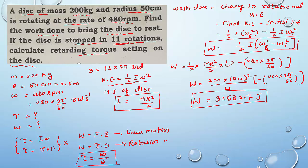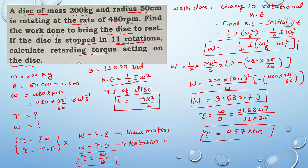Then we go for torque. Torque τ = W/θ. W is 31,582.7 J divided by θ, which is 11 rotations = 11 × 2π radians. After calculating, we get τ = 457 newton meter. So torque is 457 N·m and work done is 31,582.7 joules.